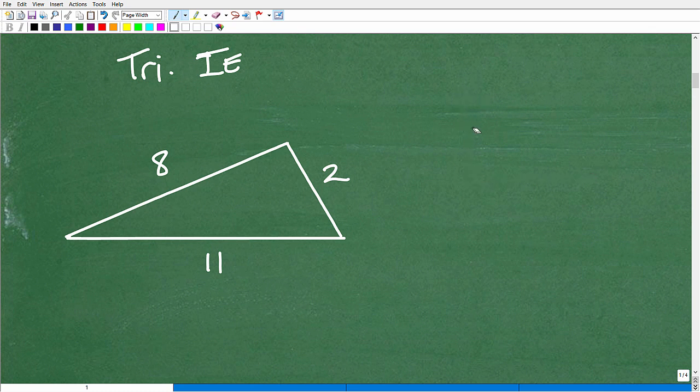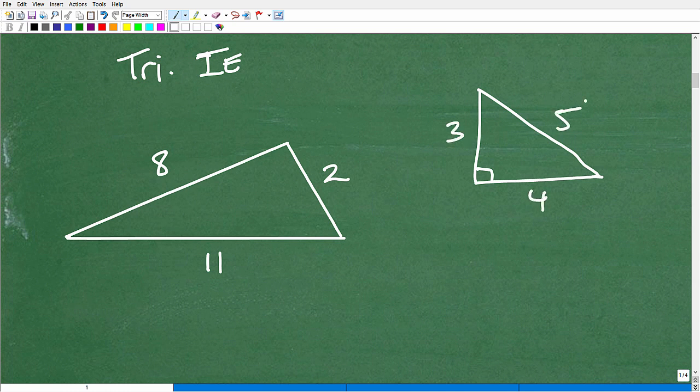And I'm just going to sketch this out. Okay. So a real triangle, all right, let's take a right triangle. Let's say this is three, four, five. Okay. So three, four, five is in fact a real triangle. Okay. This is a real right triangle. This is what we call the Pythagorean triple.